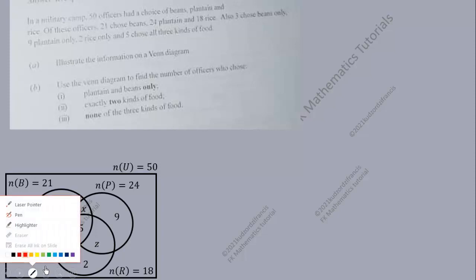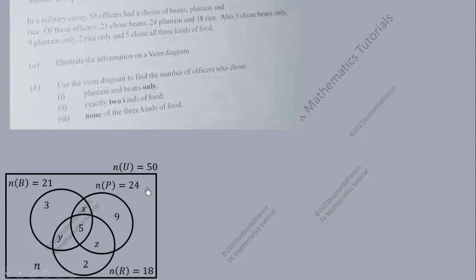There is another region — the region where none of them chose any food — representing those who chose none of the three kinds of food. Now that we have finished representing the information on the Venn diagram, we need to use it to calculate the number of officers who chose plantain and beans only, which we call x.